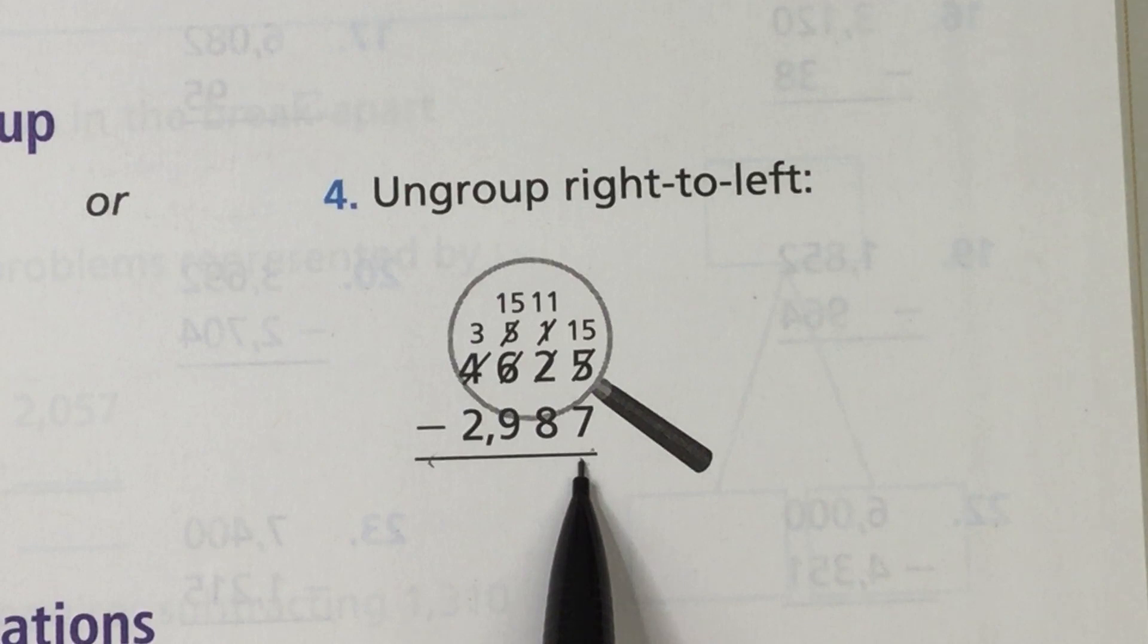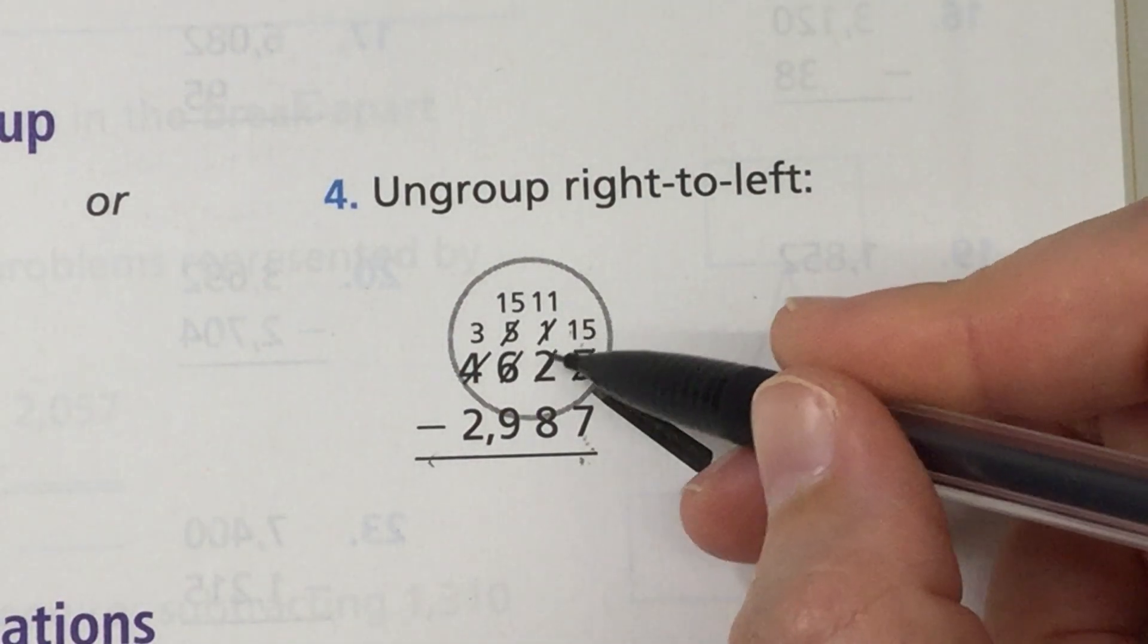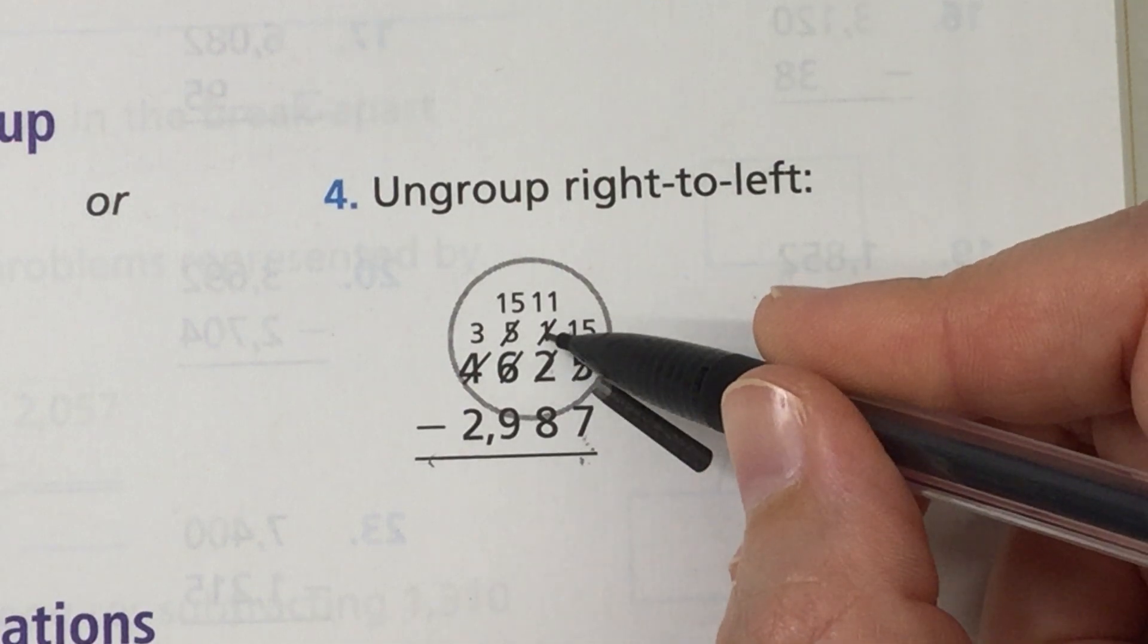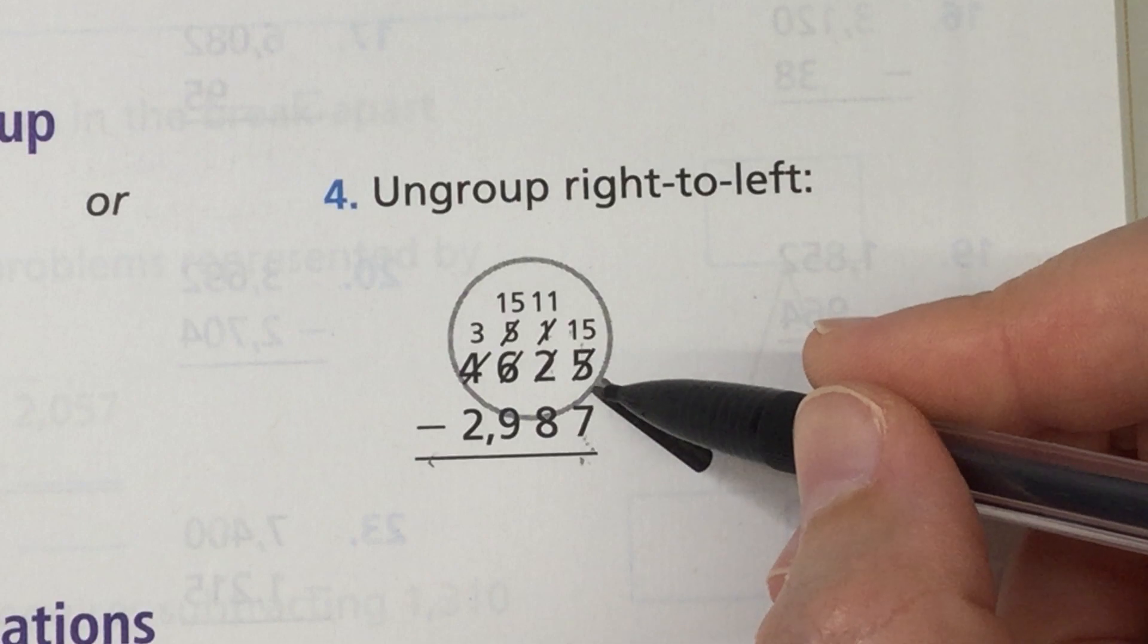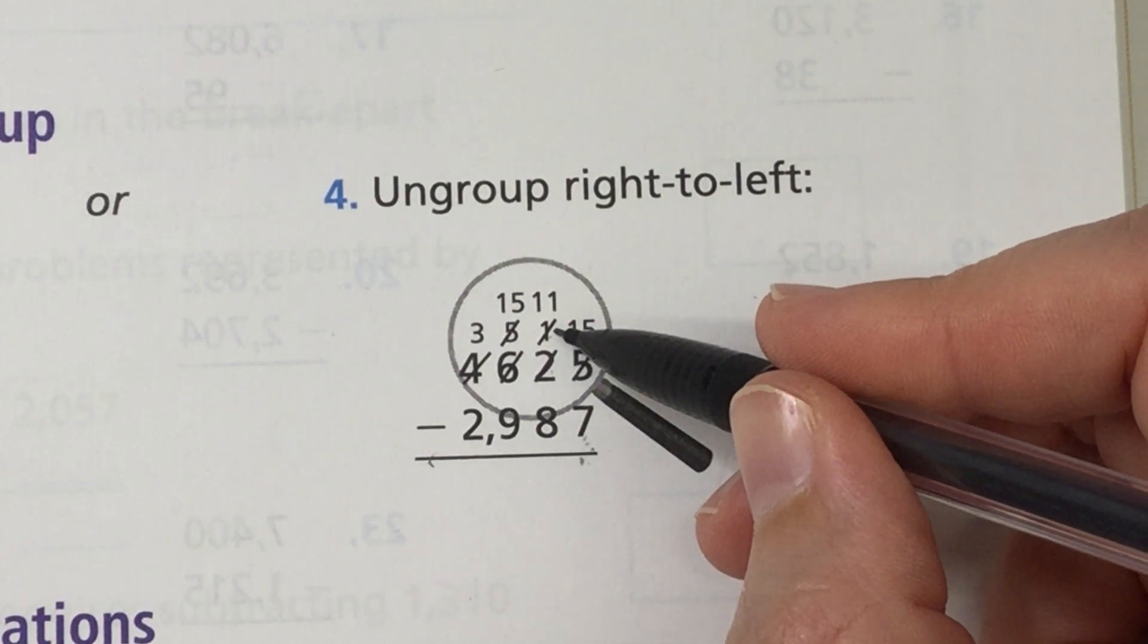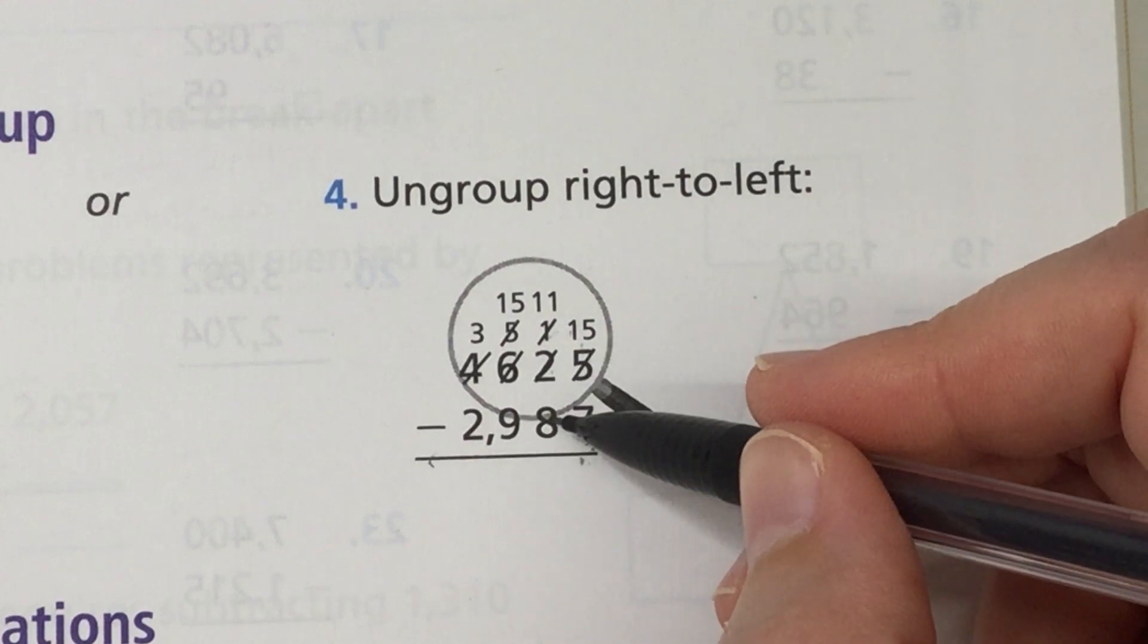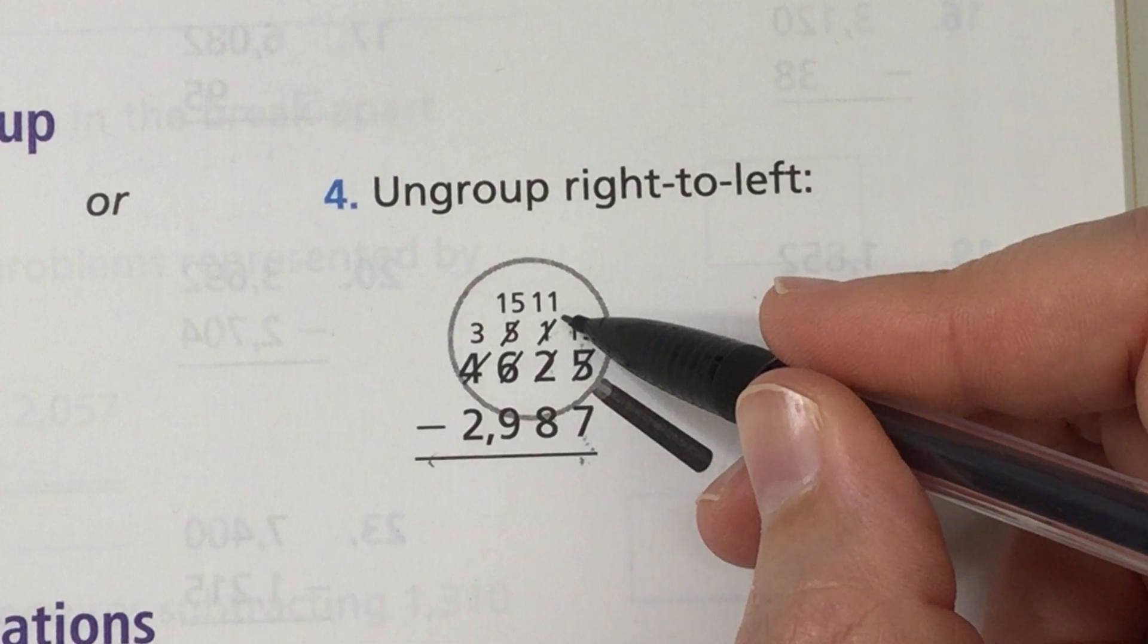So in the ones place 5 minus 7. 5 minus 7 is not possible so I have to change the 5 to a 15. This 2 becomes a 1 because I have taken from the tens and I got 10 plus 5 is 15. So the 2 became a 1. Now 1 minus 8 is not possible so I have to put a 1 in front of that 1 to make an 11.